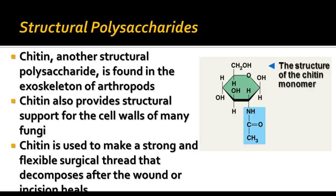Another structural polysaccharide is chitin, found in the exoskeleton of arthropods and also in the cell walls of fungi. The chitin monomer has an amino group, a carbonyl group, and a methyl group attached to one of the carbons in the six-carbon chain. Chitin provides very good structural support for arthropods and fungi, and it's also used to make strong surgical thread that can decompose after a wound heals — so dissolving sutures may be made from chitin.